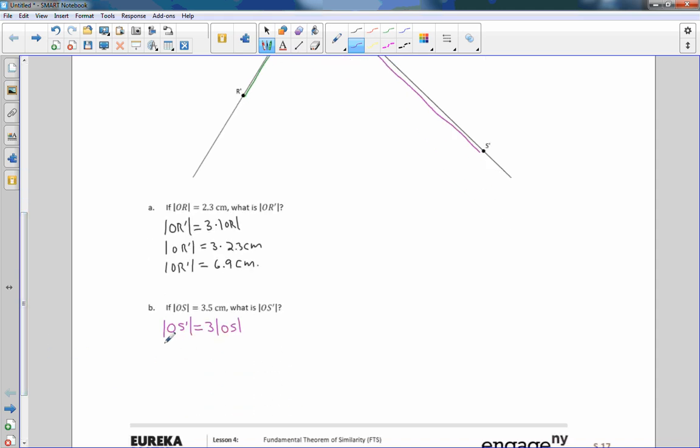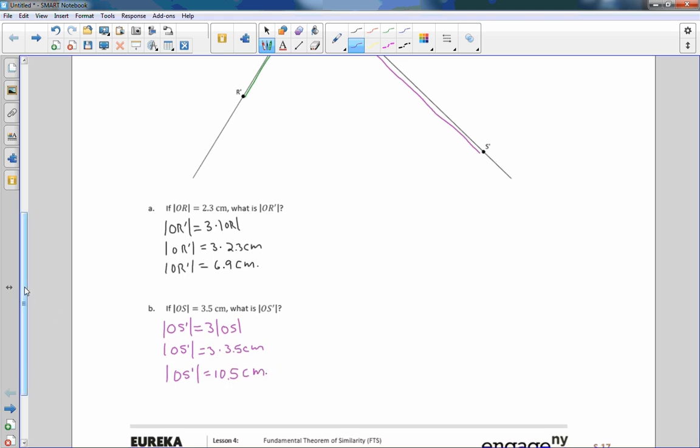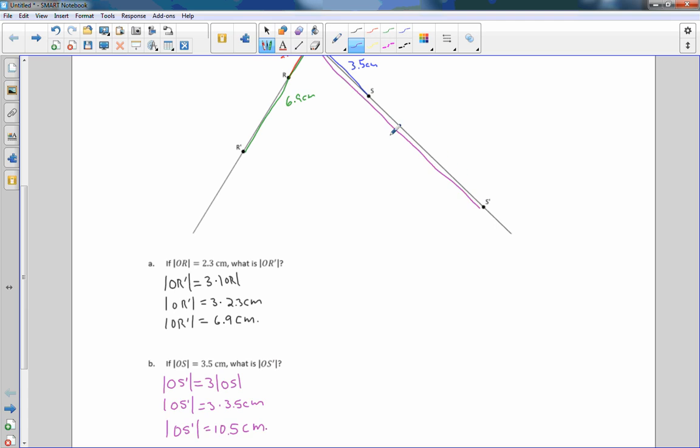So now I'm going to simplify this, or substitute in my givens. And OS is 3.5 centimeters. So the length of OS prime is 3 times 5 is 15, carry the 1. 3 times 3 is 9, plus that 1 is 10.5 centimeters. So if I move back up here and label this whole distance, it is 10.5 cm.